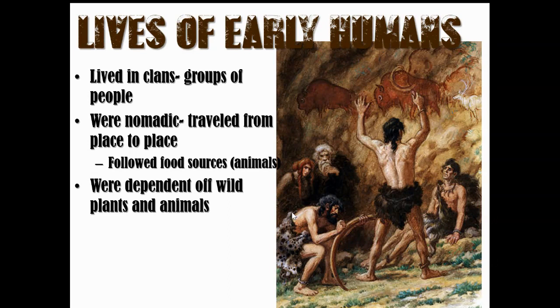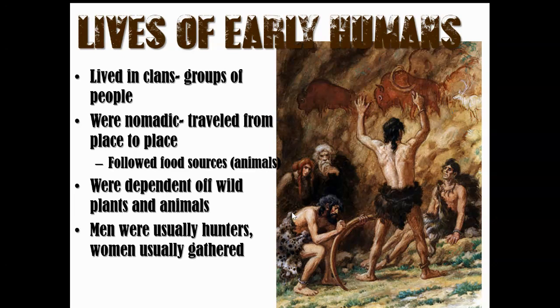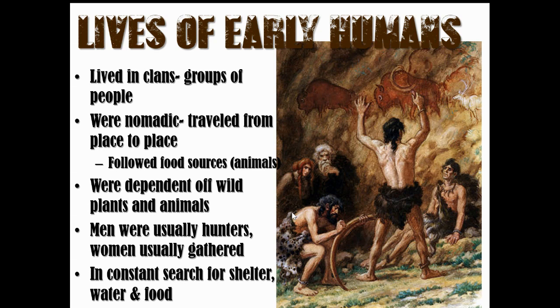Since they didn't know how to grow food, they'd hunt wild animals or gather wild plants. Once all the animals were gone, they'd pack up and move again. Men were usually the hunters — they had more muscle. Women usually gathered plants and took care of the children. They were always looking for shelter, water, and food — the three most important things — in a constant search.